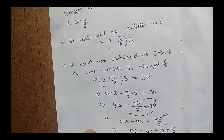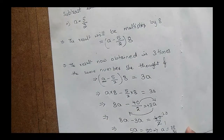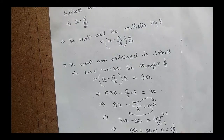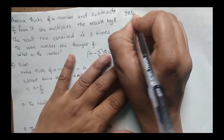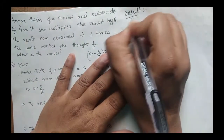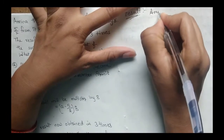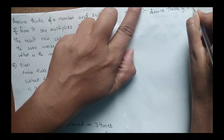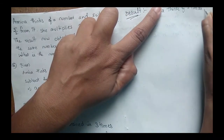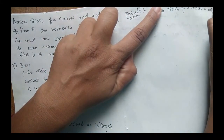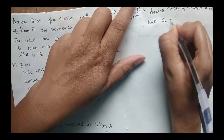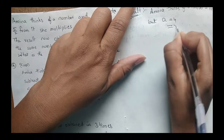Now, 20 divided by 5 equals 4. So a = 4. Therefore, the number Amina thinks of is 4. This is the answer.